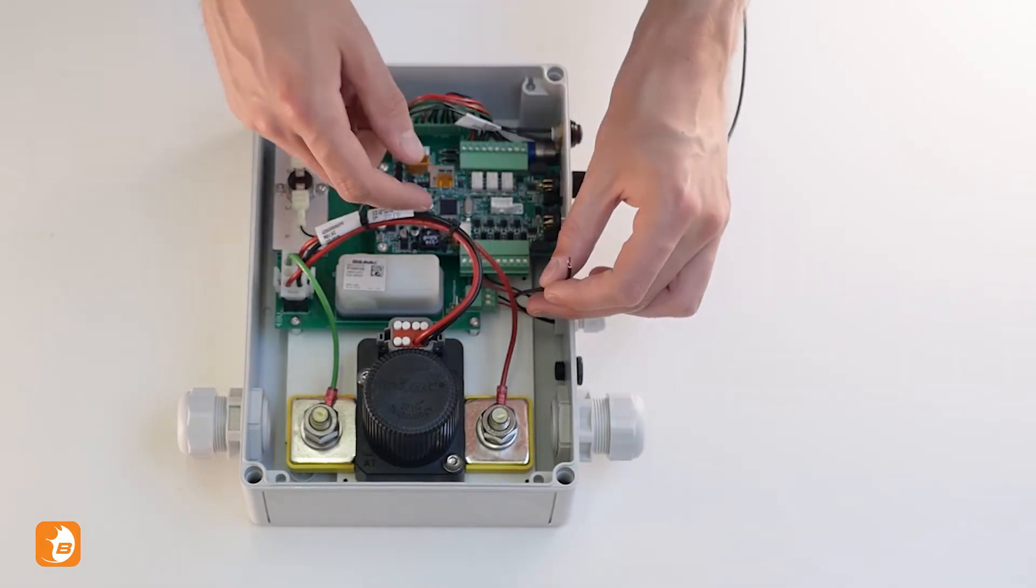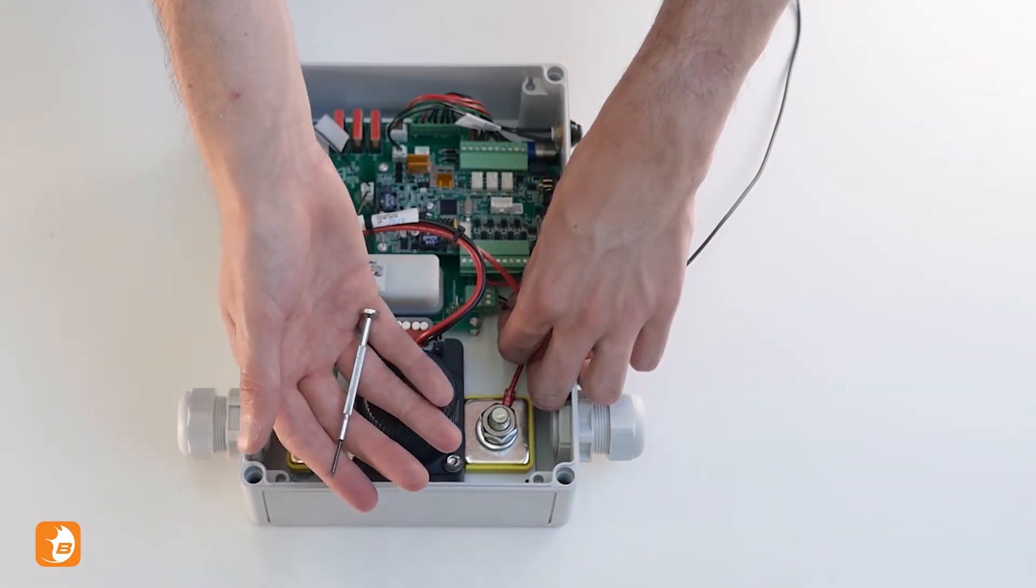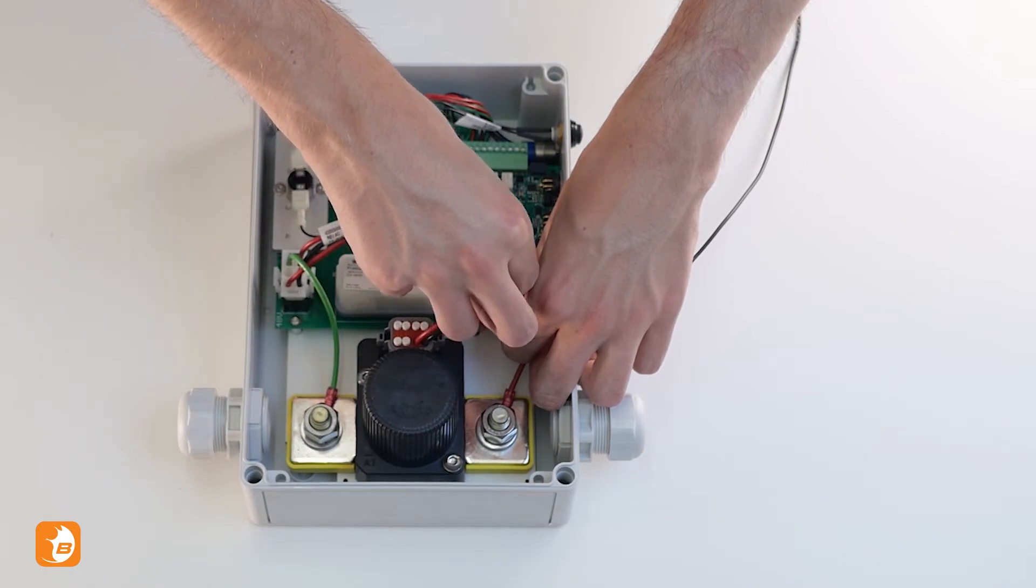Twist the loose cables together and connect them to the open slot as shown. Secure it with a small screwdriver. Connect the other end of the cable to the minus terminal of your battery.